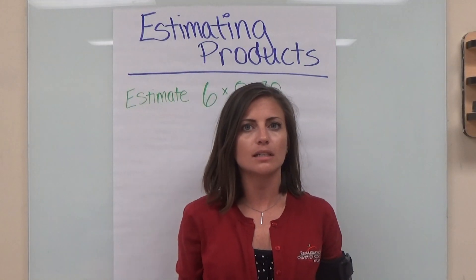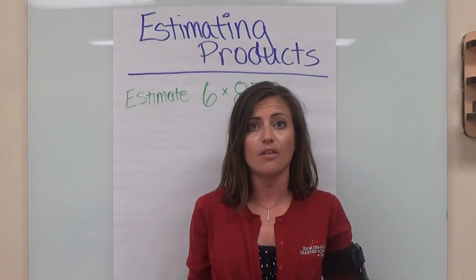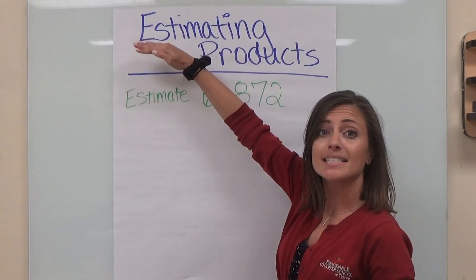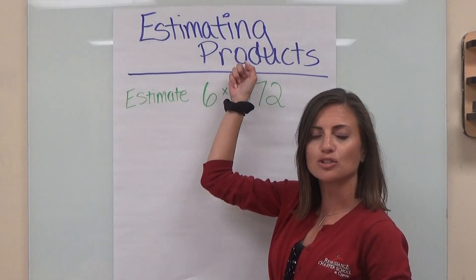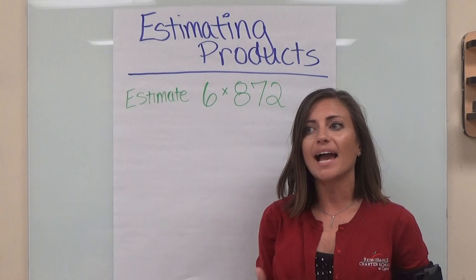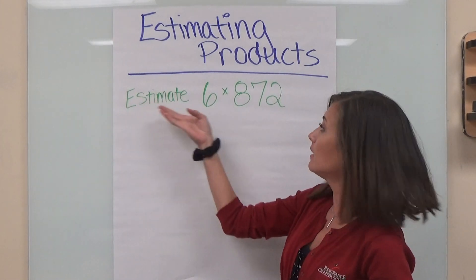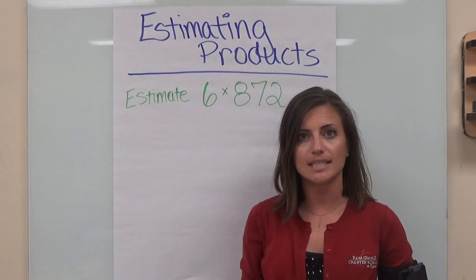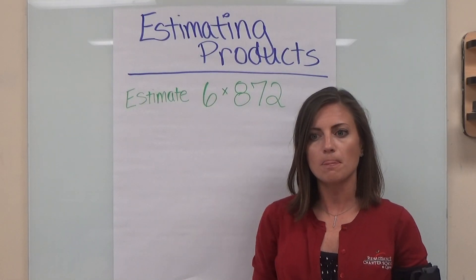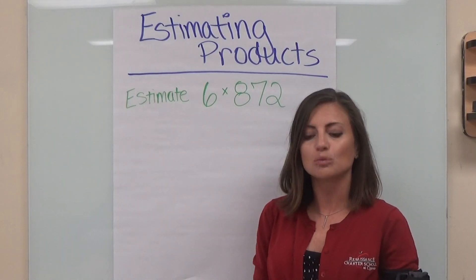Now, estimating products is going to sound like two words that we really don't know how they relate to math. All it means is we are using rounding to make an estimation of the answer to our multiplication problems. So when we are being asked to estimate on a test, it might look something like this: estimate six times 872. If they ask you this question, or if someone is being asked to estimate, that means we are going to round.